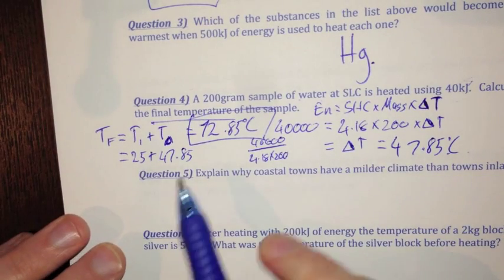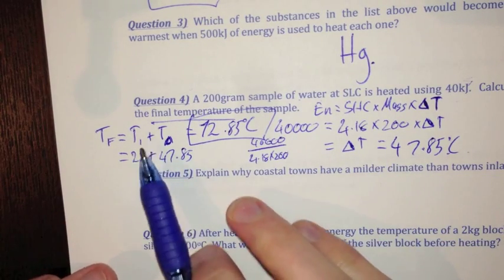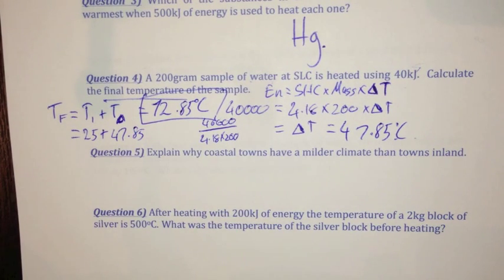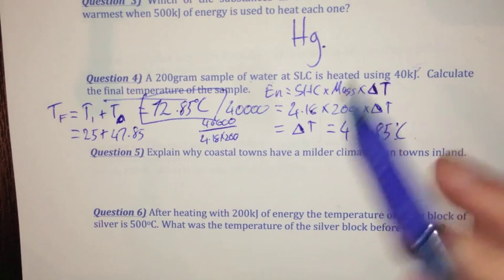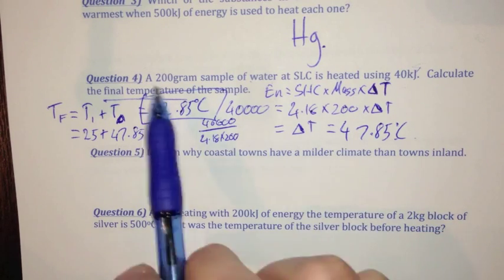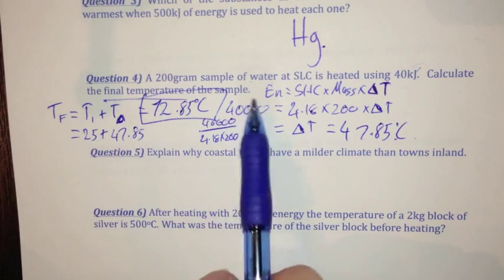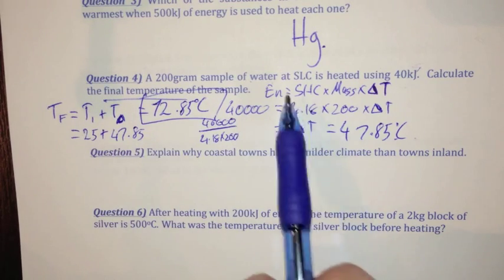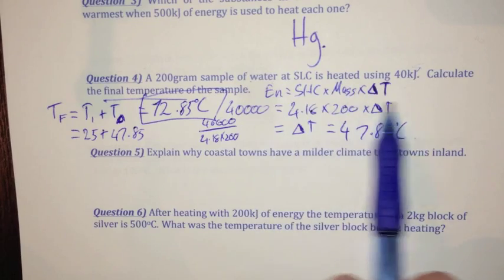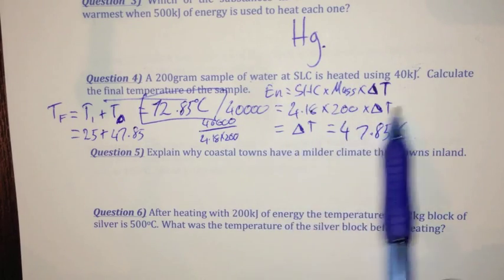Because I need to add my temperature change to my initial temperature — that's how you find final temperature. It's very important to read the question and work out what it's actually asking. People often stop at the temperature change without continuing to find the final temperature. Read the question, work out what it wants you to find, and follow it through — always starting off with your formula.